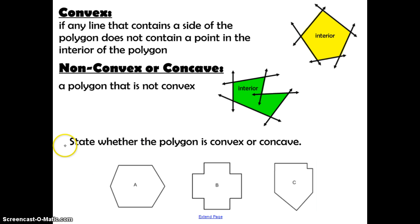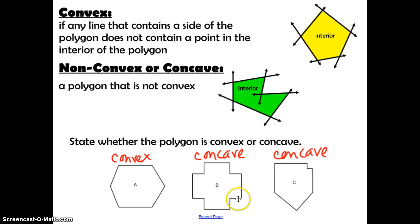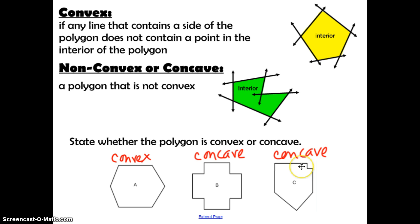Pause and state whether each polygon is convex or concave. Hopefully you got the same answers that I did. Think of concave as having something caved out of it — part of the polygon has been taken out.